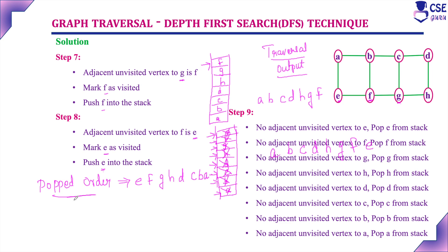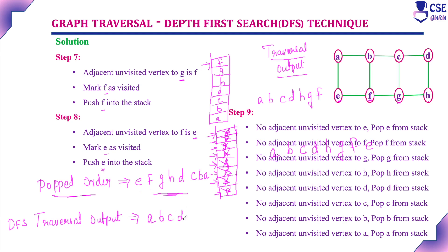The popped order of vertices is: E, F, G, H, D, C, B, A. The DFS traversal output, considering all visited vertices in order, is: A, B, C, D, H, G, F, E. This is the complete traversal output and this is the popped order of the elements.